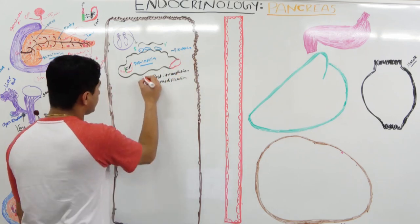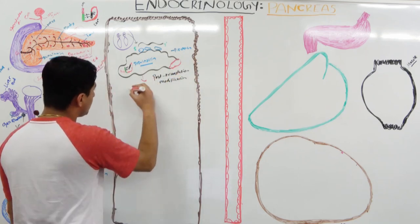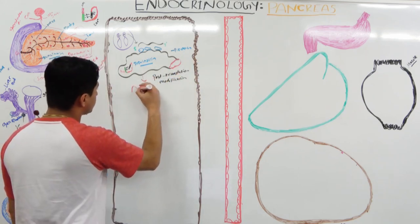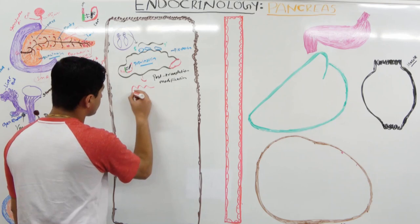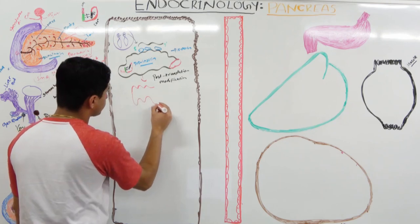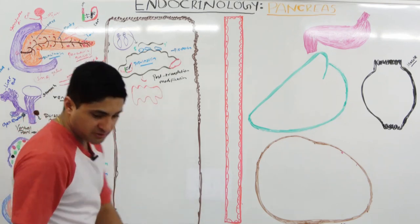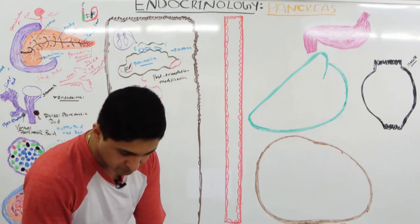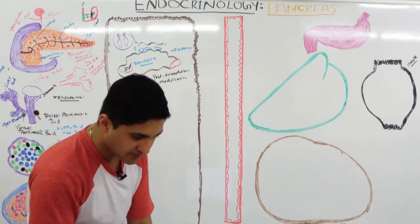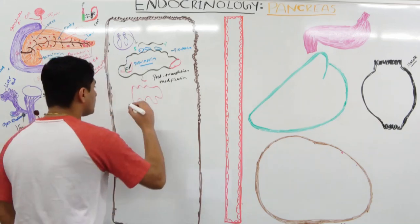After cleavage by the endopeptidases, the vesicles bud off and travel to the Golgi complex, where further modifications can take place if needed.